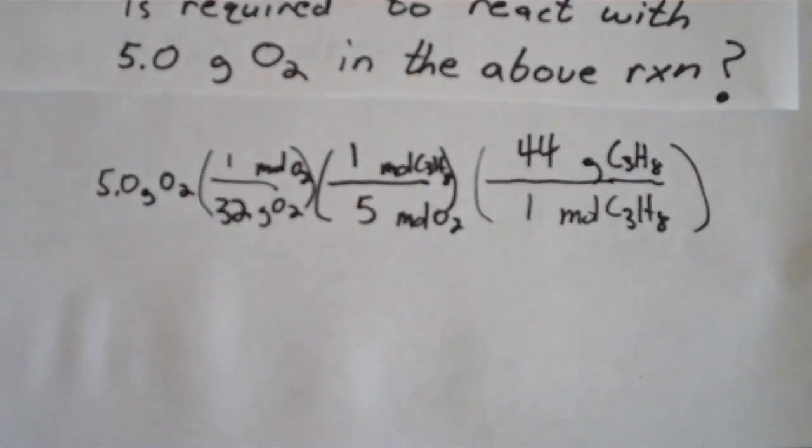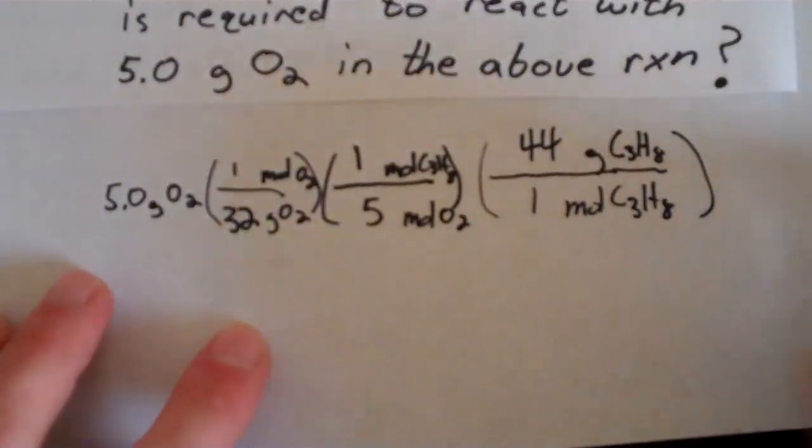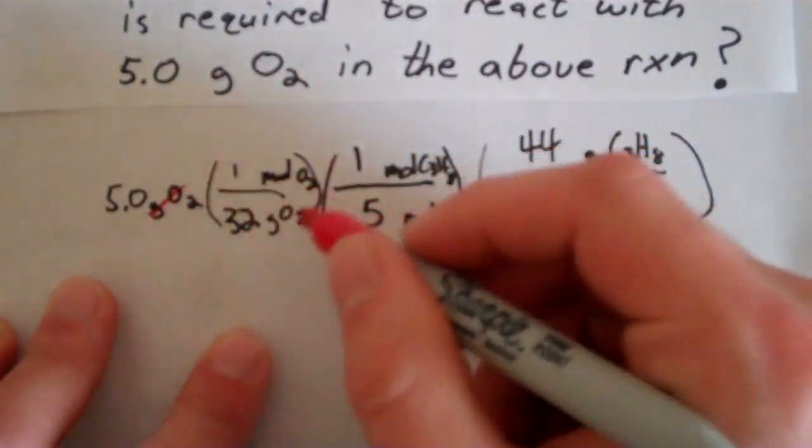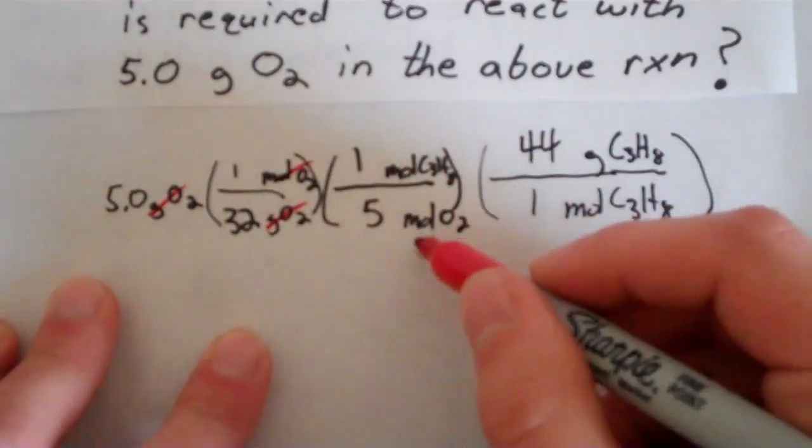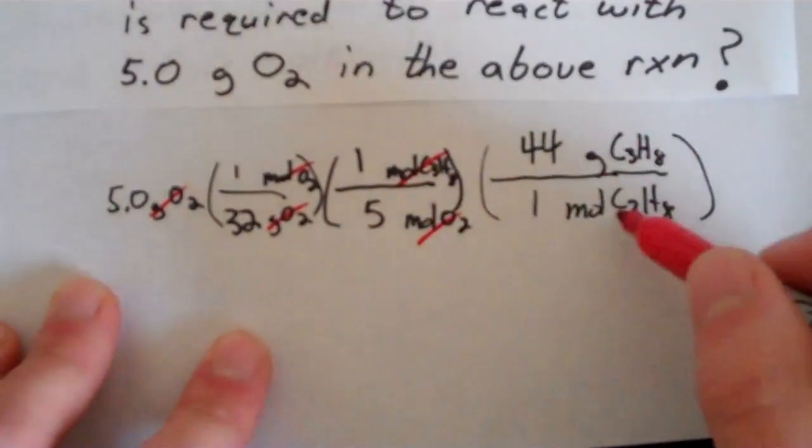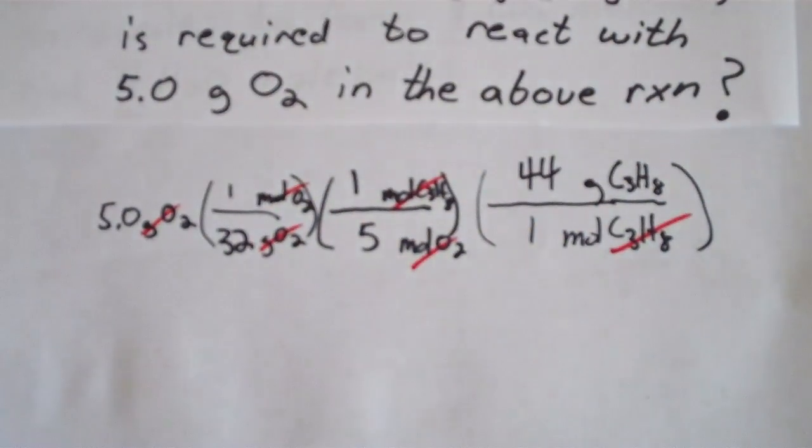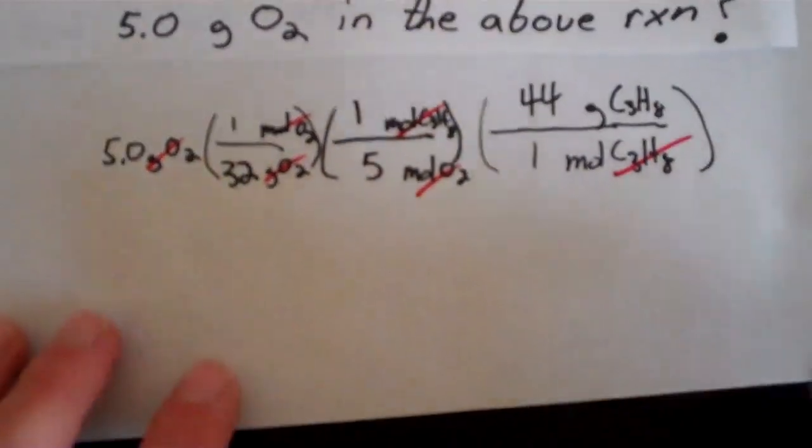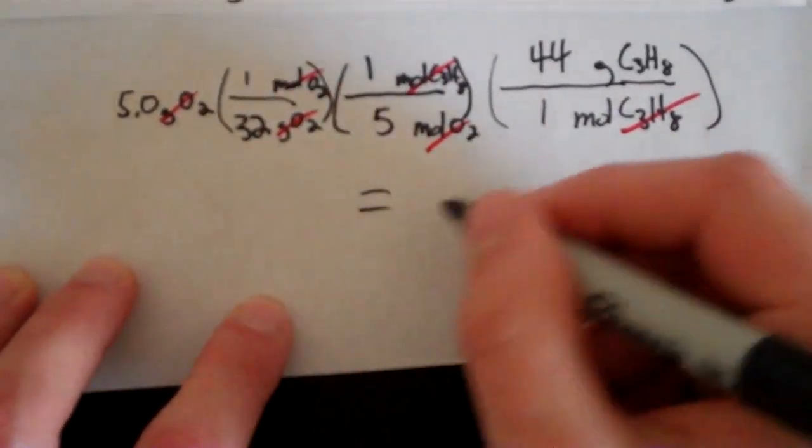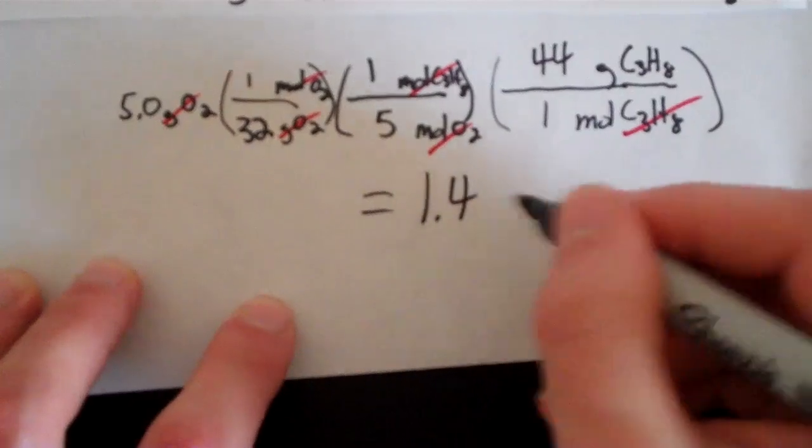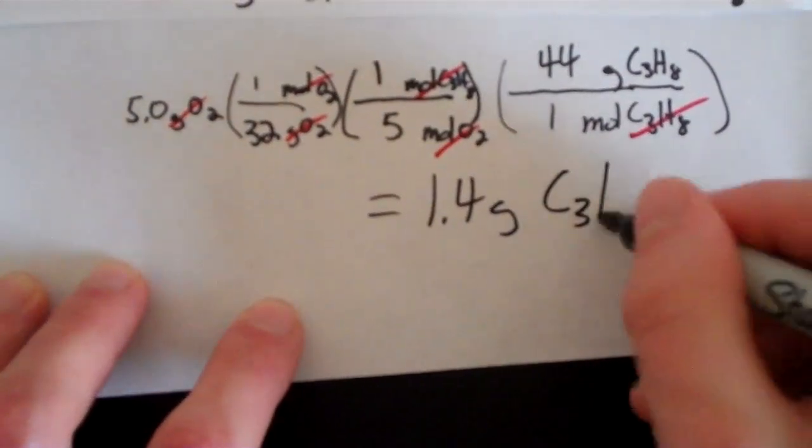So always make sure to cancel out your units. Grams of O2 cancel here. Moles of O2 cancel here. Moles of propane cancel out here. And we're left with good old grams of propane. Okay? See how I did that? And it turns out that the answer, if you put this in a calculator, will be roughly 1.4 grams of propane.